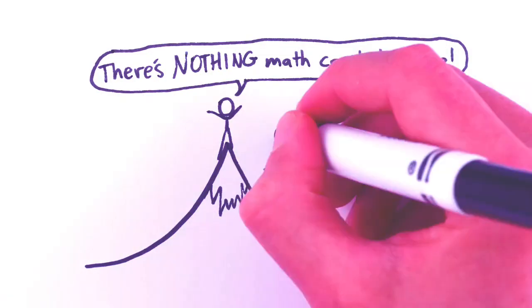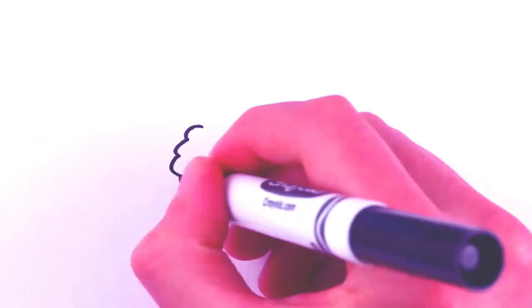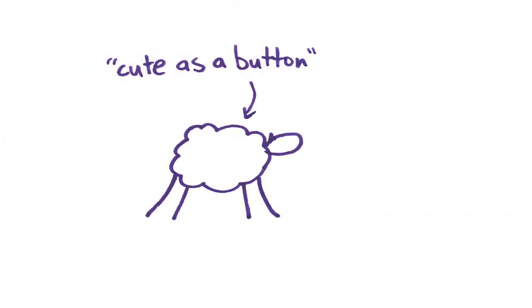But at first glance, our universe doesn't seem very mathematical at all. A sheep has properties such as cuteness and fluffiness, not mathematical properties.